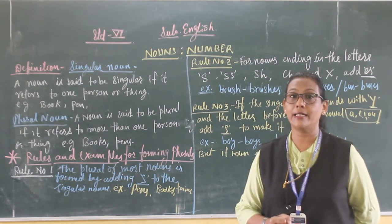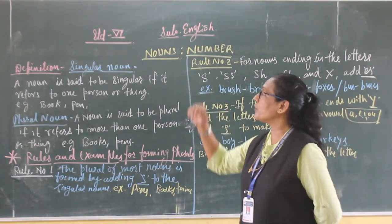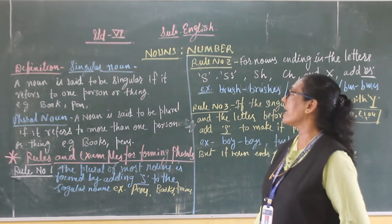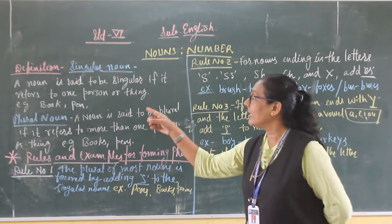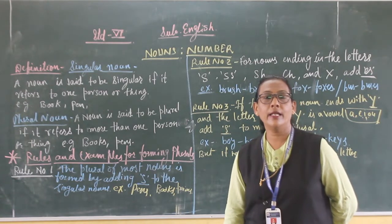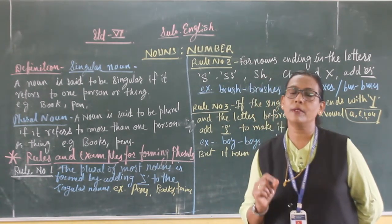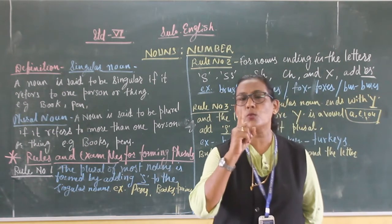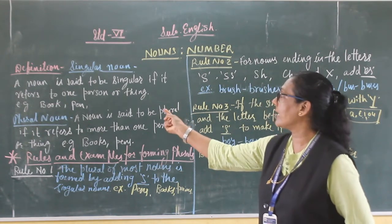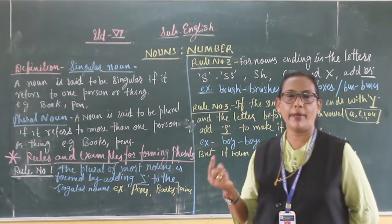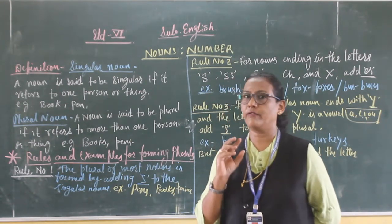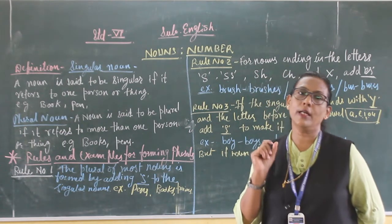In nouns, we have singular noun and plural noun. What is the definition of singular noun? A noun is said to be a singular noun if it refers to one person or one thing. For example, book, pen, pencil — when we are referring to one, that is called a singular noun.